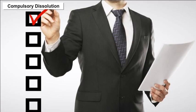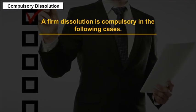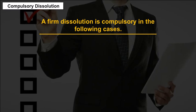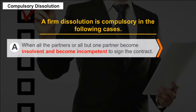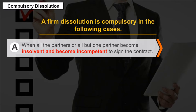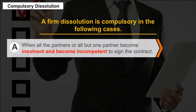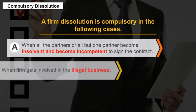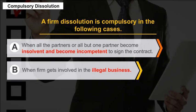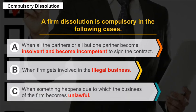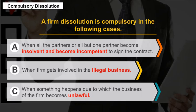Compulsory Dissolution. A firm dissolution is compulsory in the following cases: A. When all the partners, or all but one partner, become insolvent and become incompetent to sign the contract. B. When the firm gets involved in illegal business. C. When something happens due to which the business of the firm becomes unlawful.